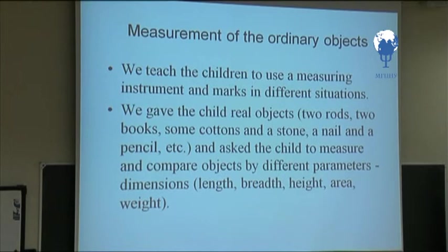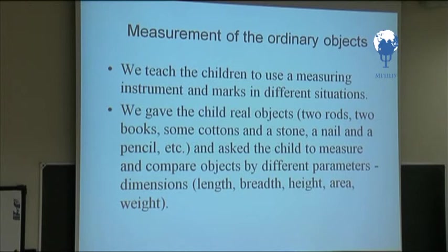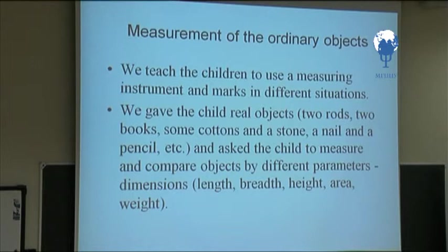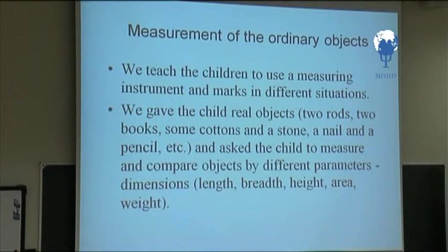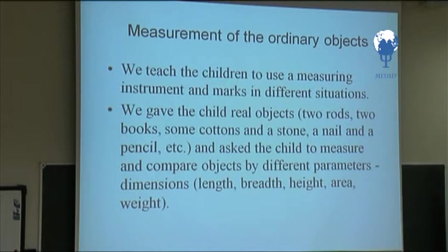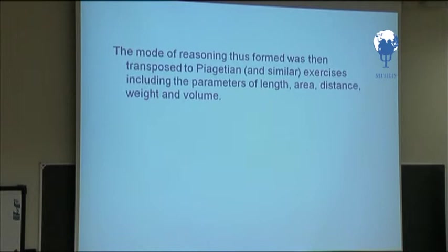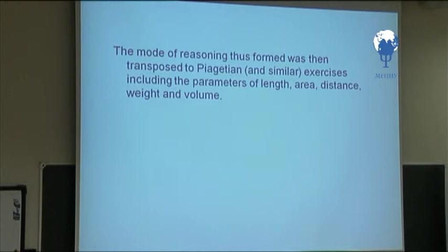After this, we taught children to use a measuring instrument and marks in different situations. We gave the child real objects — two rods, two books, some cartons and a stone, a nail and a pencil, etc. — and asked the child to measure and compare objects by different parameter dimensions: length, breadth, height, area, and weight. The mode of reasoning thus formed was then transposed to Piagetian and similar exercises, including the parameters of length, area, distance, weight, and volume.